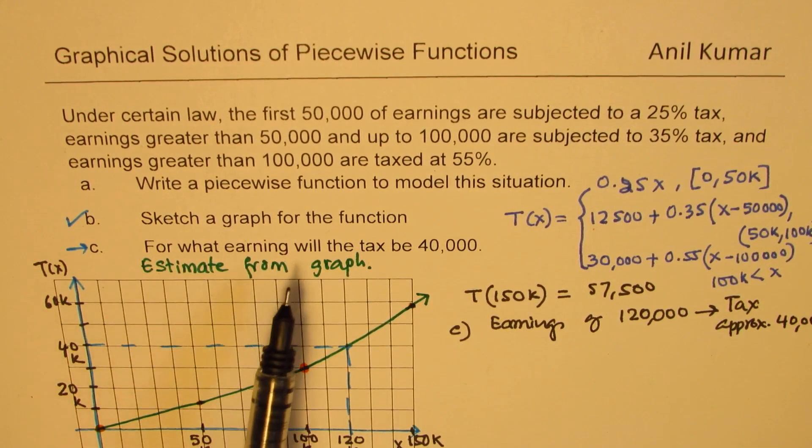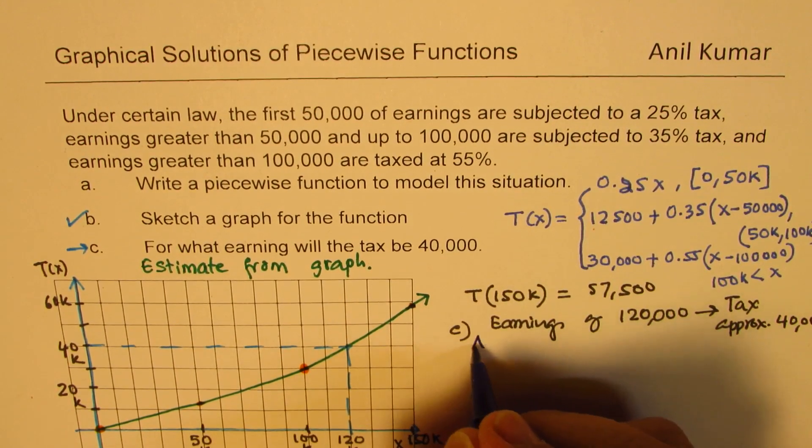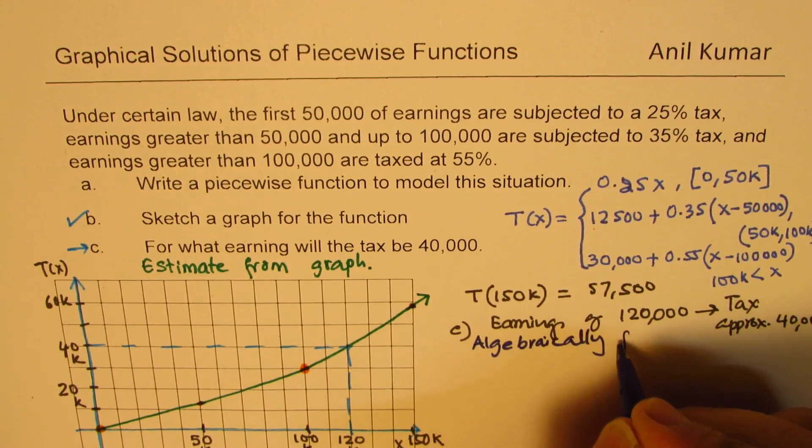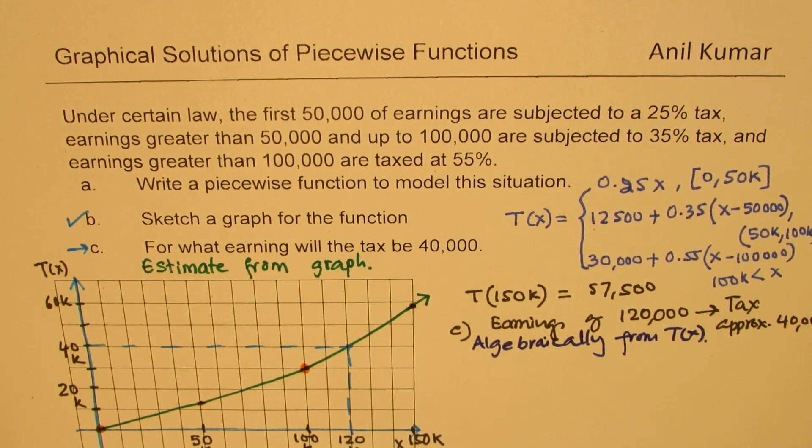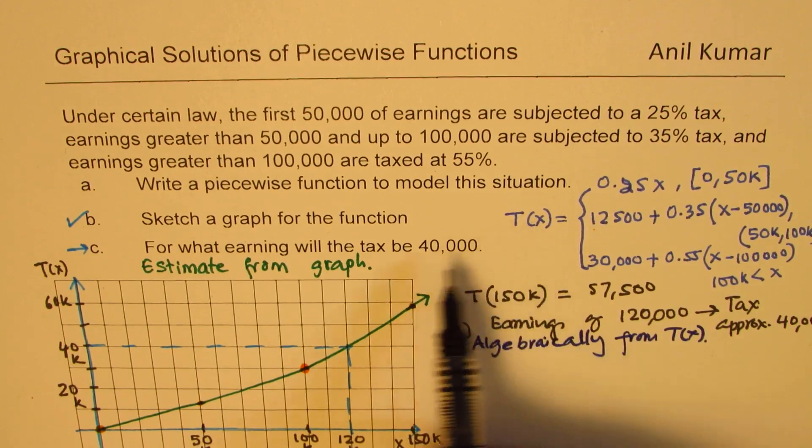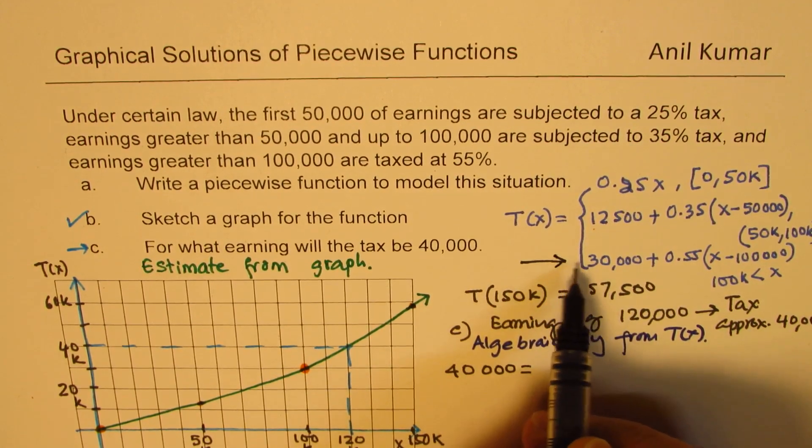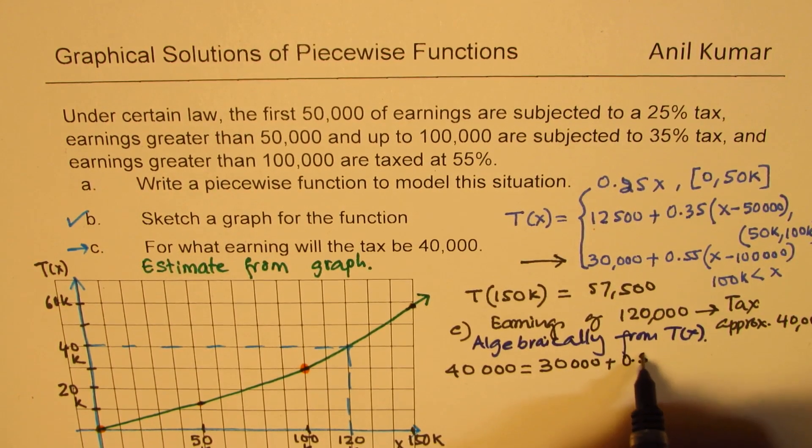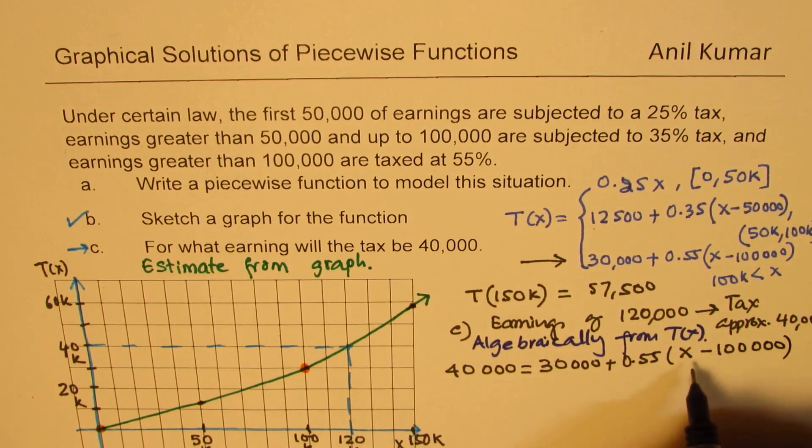So part C, we get earnings of 120,000 will be taxed approximately 40,000. For some of you, you can actually pause the video and calculate it theoretically. So let's do the reverse calculation. We'll extend this and we'll do part C algebraically from the function T of X. So what we are given here is the tax amount is 40,000. Since this amount lies in the third bracket, it should be equal to 30,000 plus 0.55 times X minus 100,000. We need to find X.